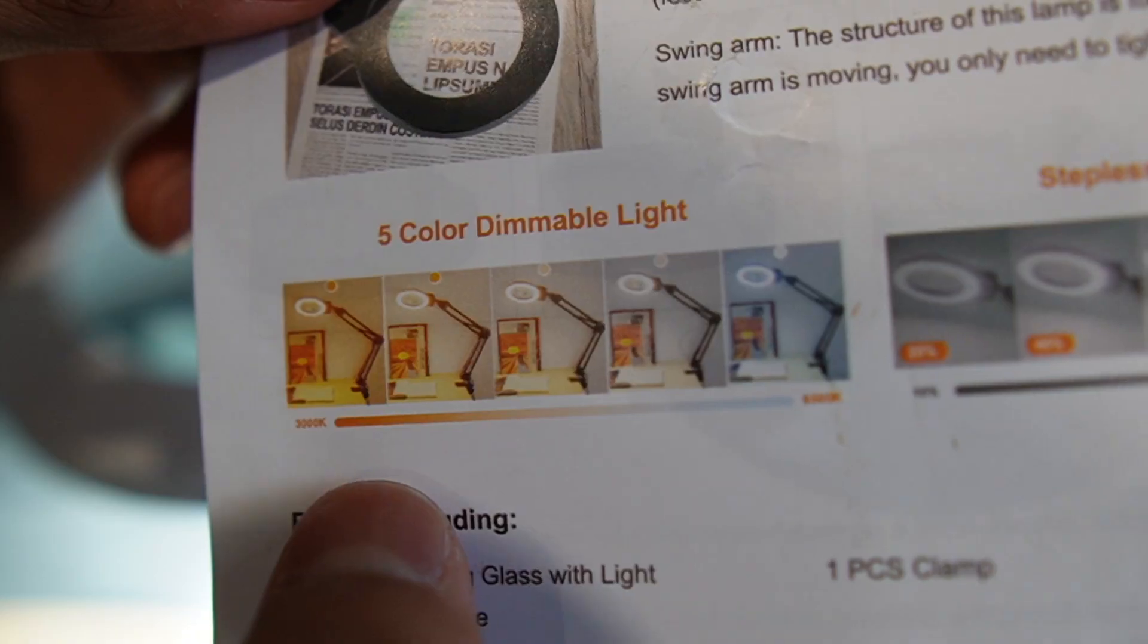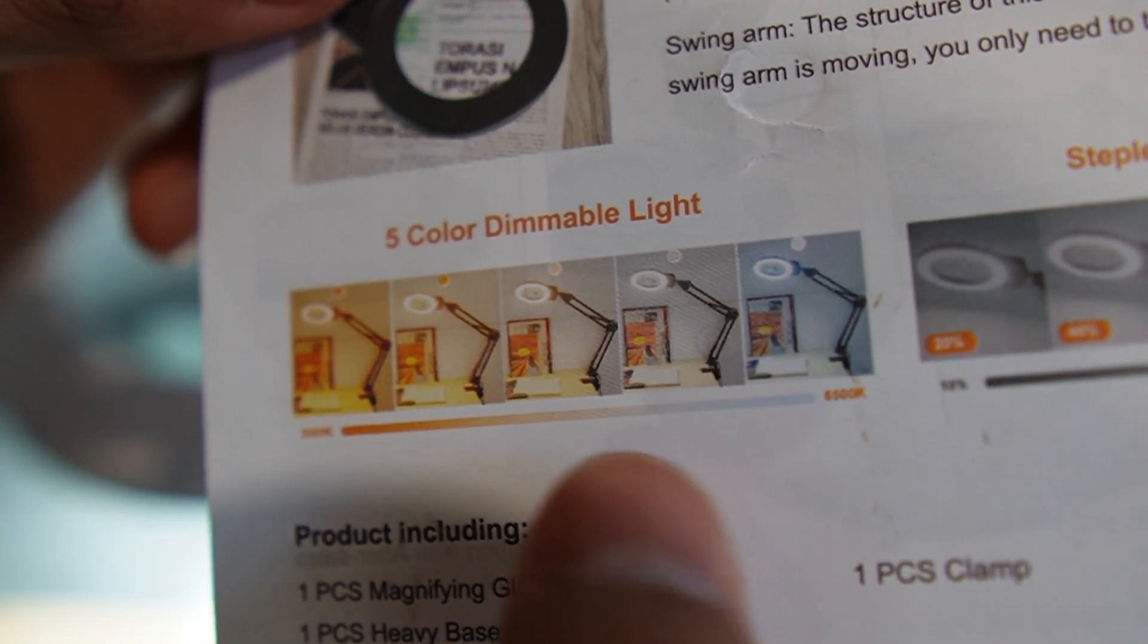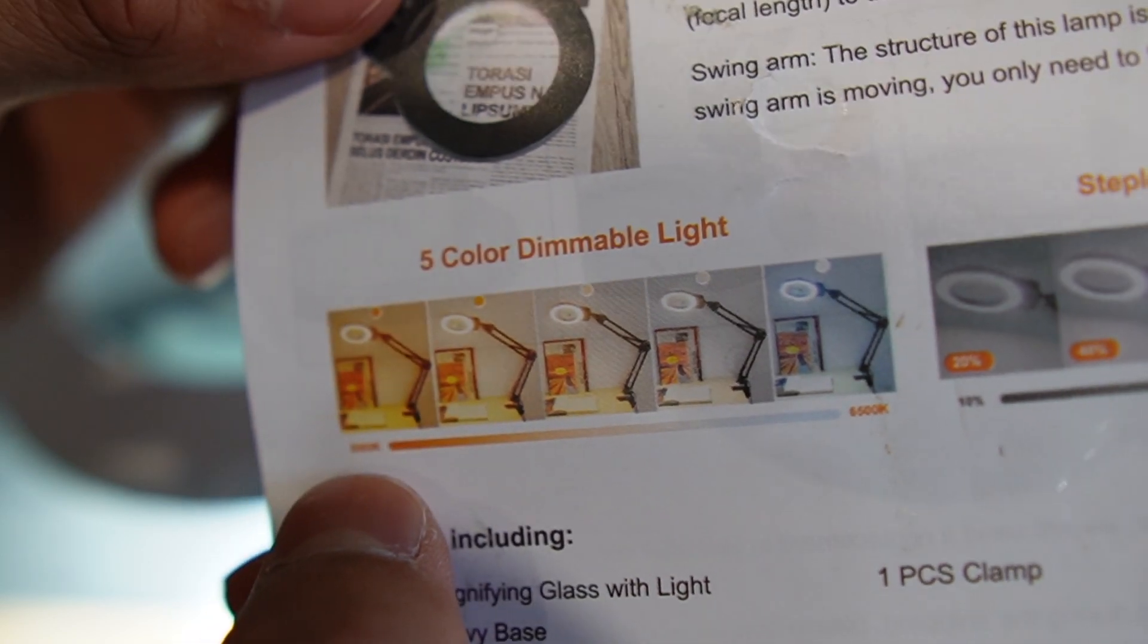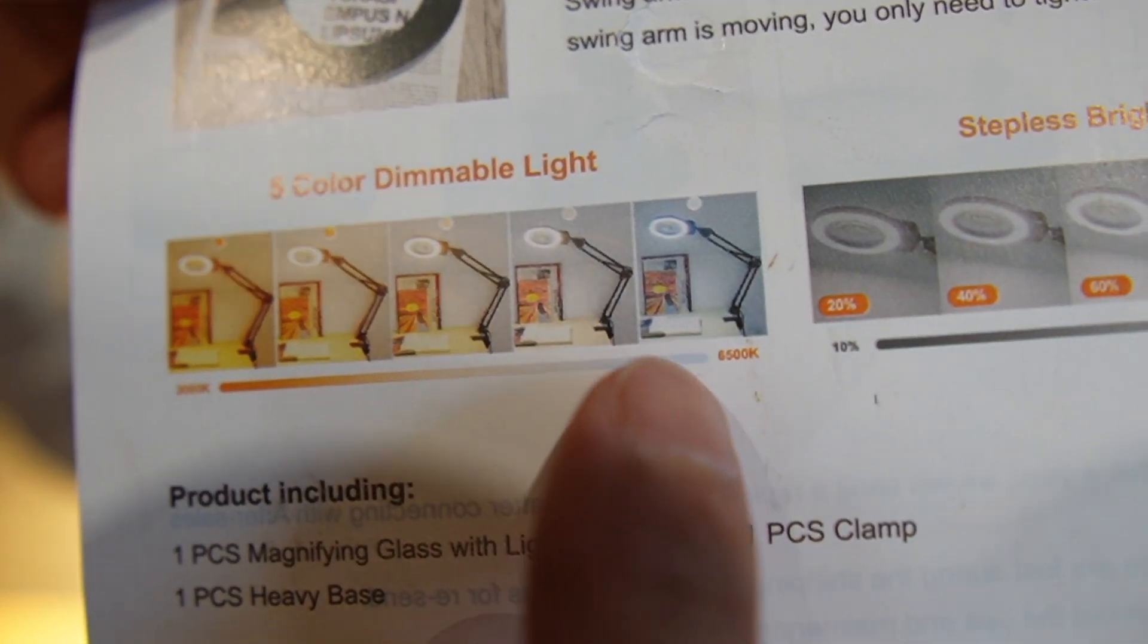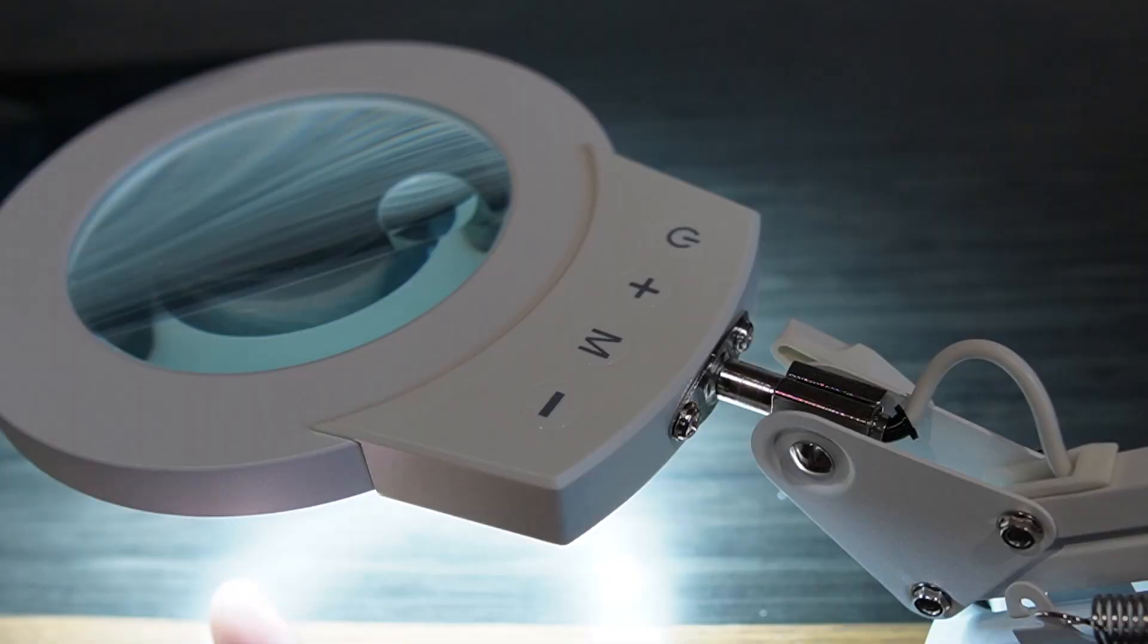Here we can see the lowest temperature is 3,000 Kelvin, which is the yellow light right over here. And it goes all the way up to 6,500 Kelvin, or otherwise more like a blue light right over here.